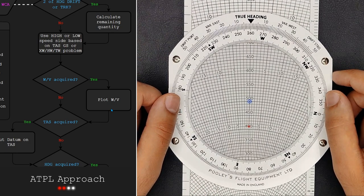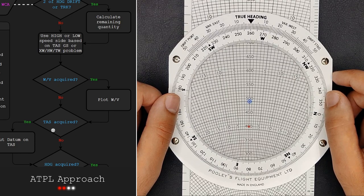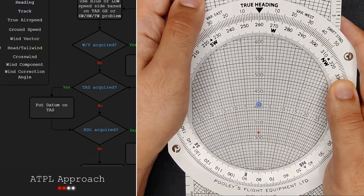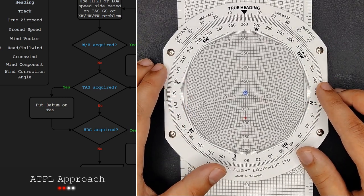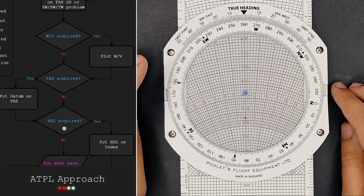The next thing we are asked is if we are given the TAS. We are, so I will now put the datum on the TAS of 420 knots. There we go. Now we are asked if we have the heading. We do not because that's what we want to find out.